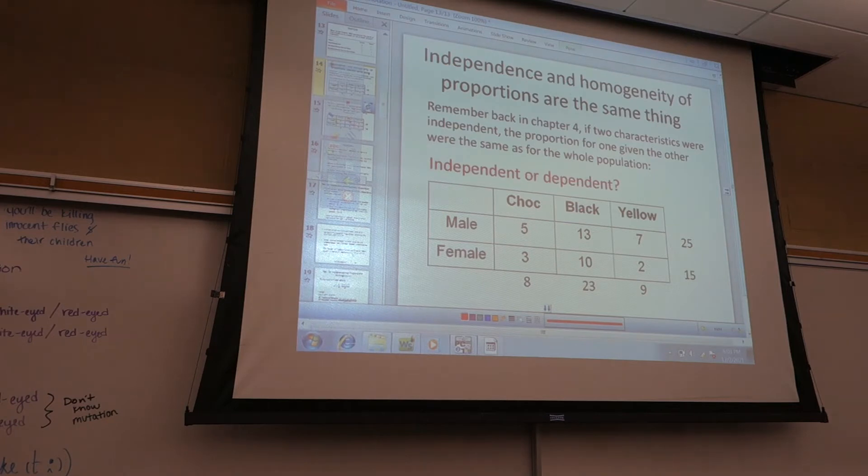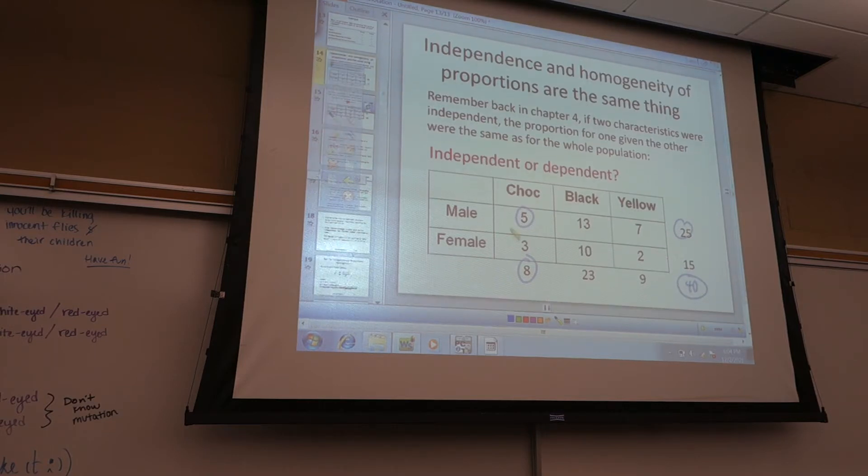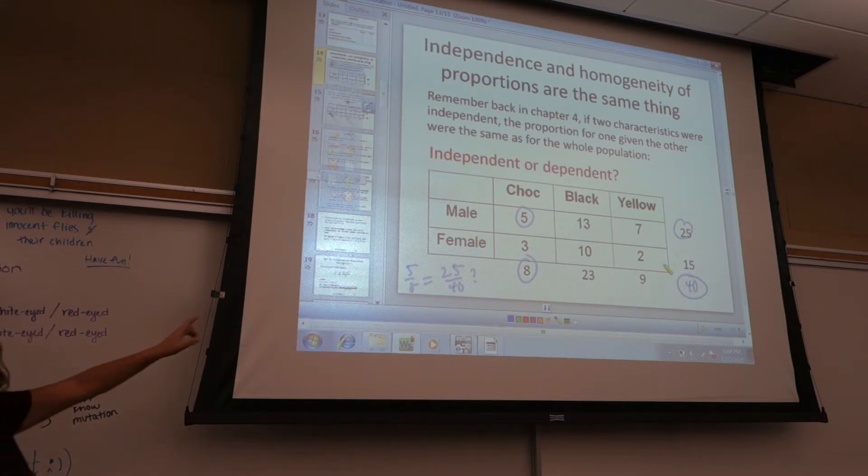In this case, how can we tell if male and chocolate were independent? Chocolate male? And I took the total of chocolates, the total of males, and my grand total. Everyone remember that part? We'll now check to see if five over eight is equal to 25 over 40. Is it? Yes. So then they're independent because their proportions are the same. When the proportions are the same, that's when they are independent.